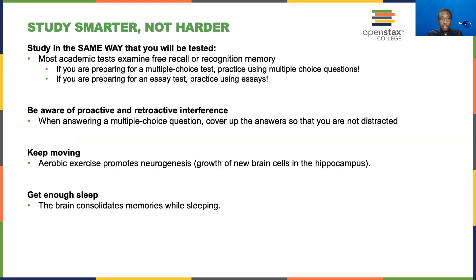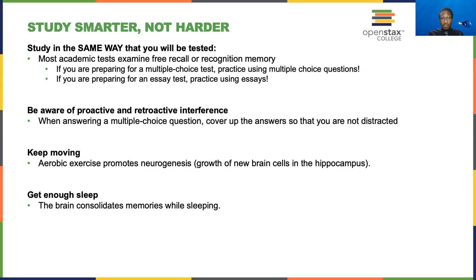Probably the most important memory strategy, particularly in the academic context, is to study in the same way that you will be tested. This sounds straightforward, but it's probably one of the most underused study strategies. Most academic exams use free recall, recognition memory, or a combination of the two. A multiple choice test is a recognition memory test — you're asked to recognize the correct answer among a selection. An essay test is free recall — you're asked to generate information you've learned. It's important to practice in the same way you will be tested.